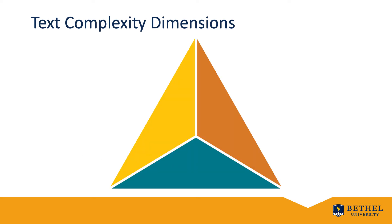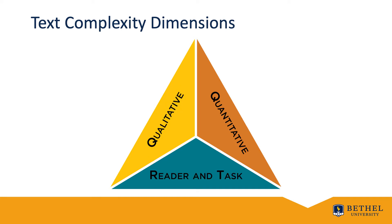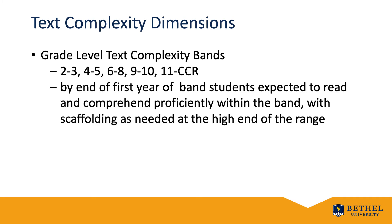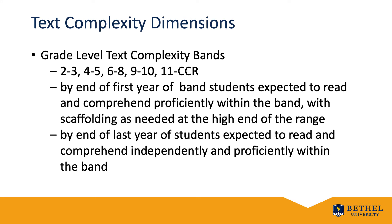There are three equally important parts or dimensions, which include quantitative, qualitative, and reader and task. These dimensions make up the requirements of grade-level text complexity bands. Text complexity in the standards is defined in the following grade bands: 2–3, 4–5, 6–8, 9–10, and 11 through college and career ready. Students in the first year of a given band are expected by the end of the year to read and comprehend proficiently within the band, with scaffolding as needed at the high end of the range. Students in the last year of the band are expected to read and comprehend independently and proficiently within the band.